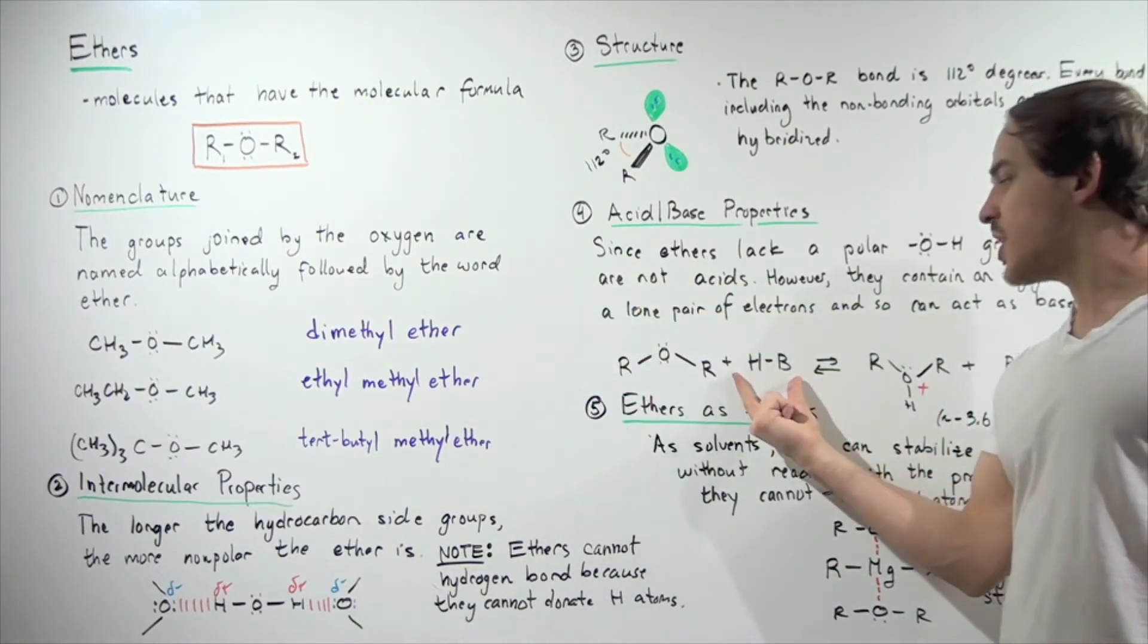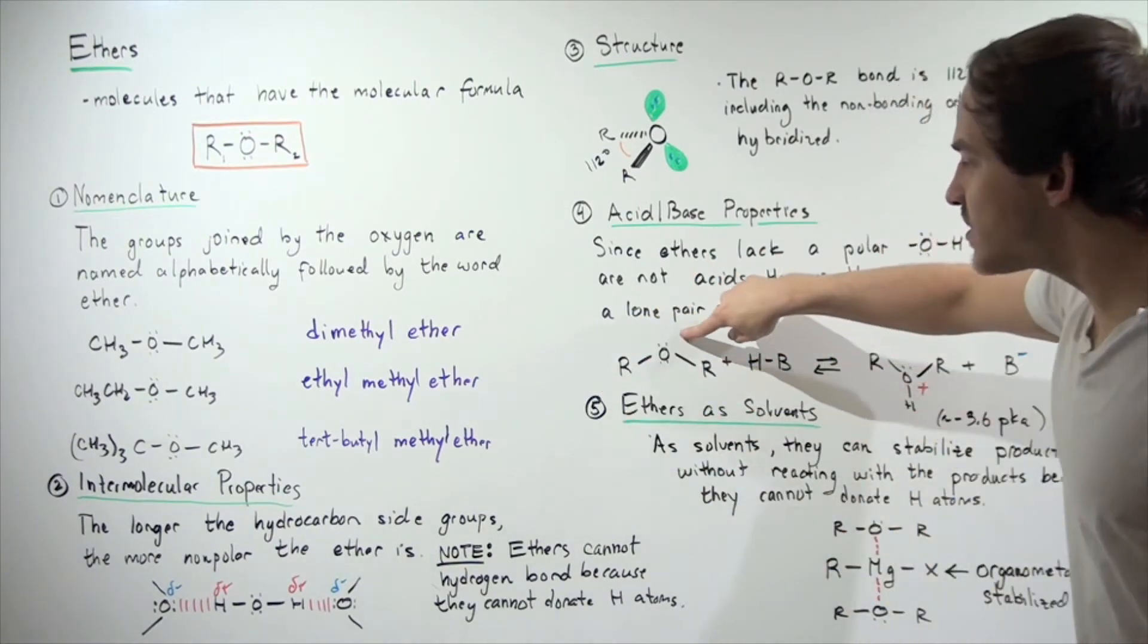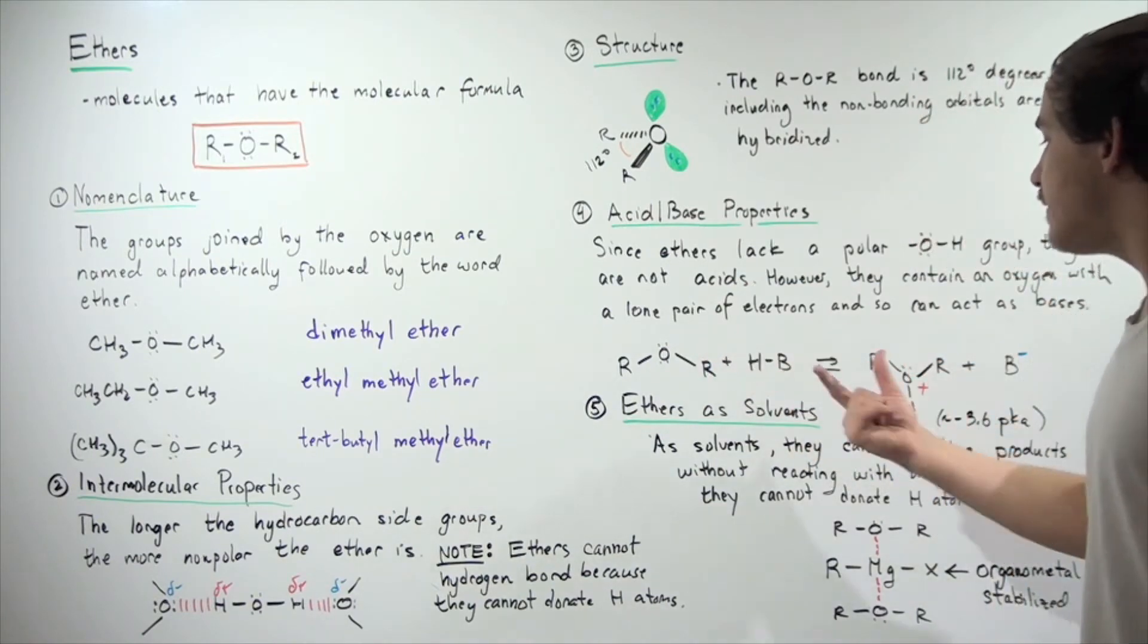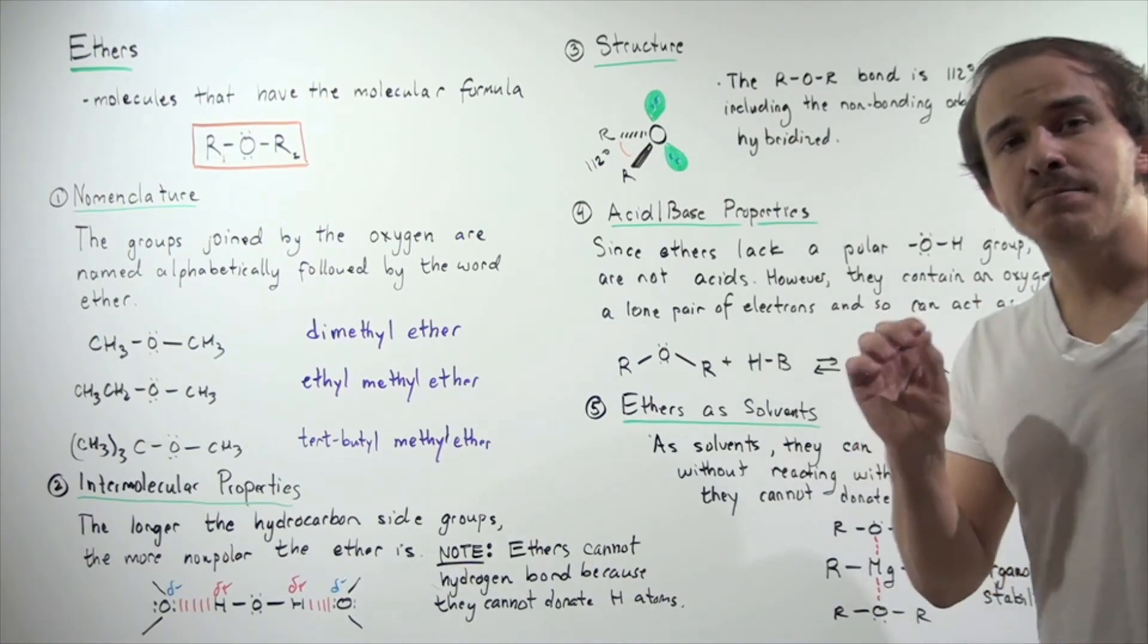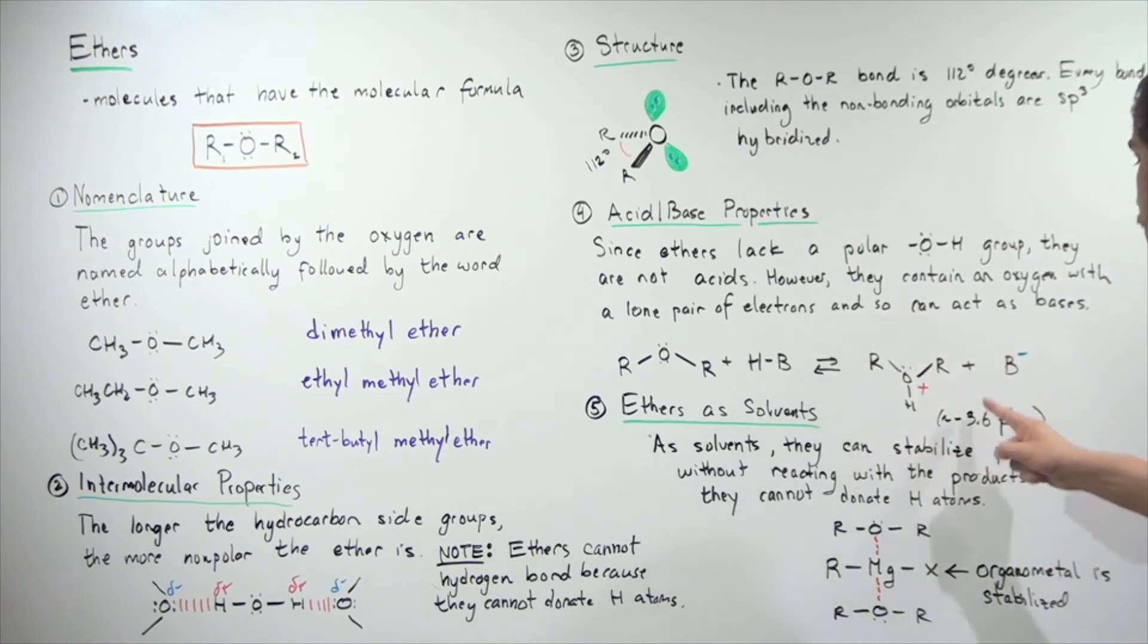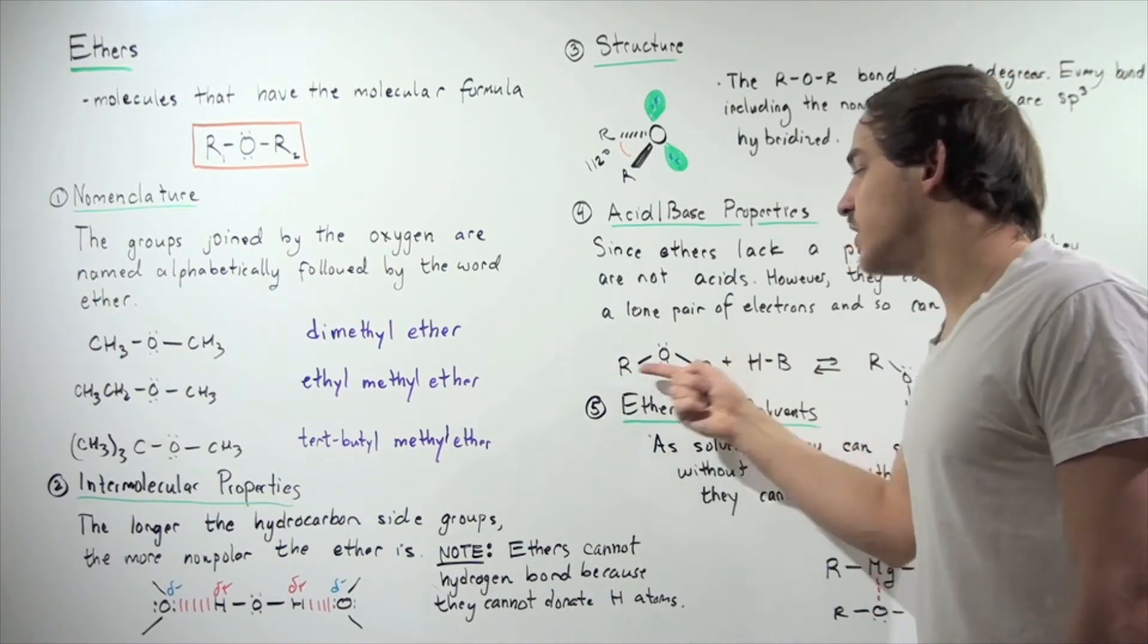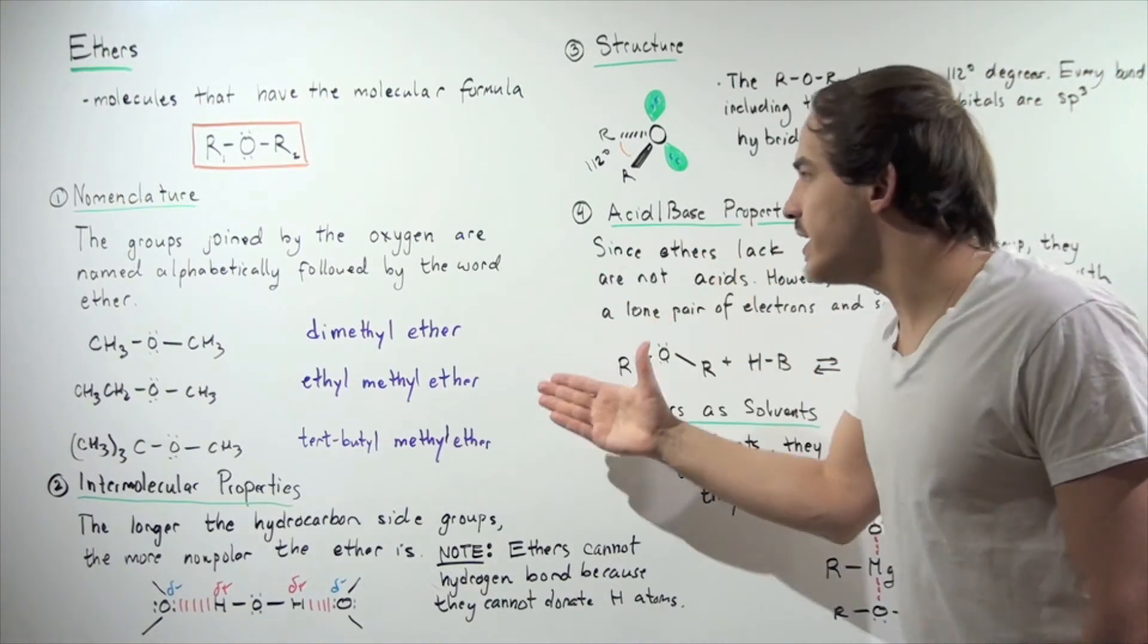Here's the general formula. Let's suppose we have some hypothetical acid HB that reacts with our ether. This lone pair of electrons can take the H atom away, forming a conjugate base and conjugate acid. The approximate pKa of this conjugate acid is negative 3.6, which means it's a relatively strong acid. So this is a relatively weak base. Even though they can act as bases, they're relatively weak.